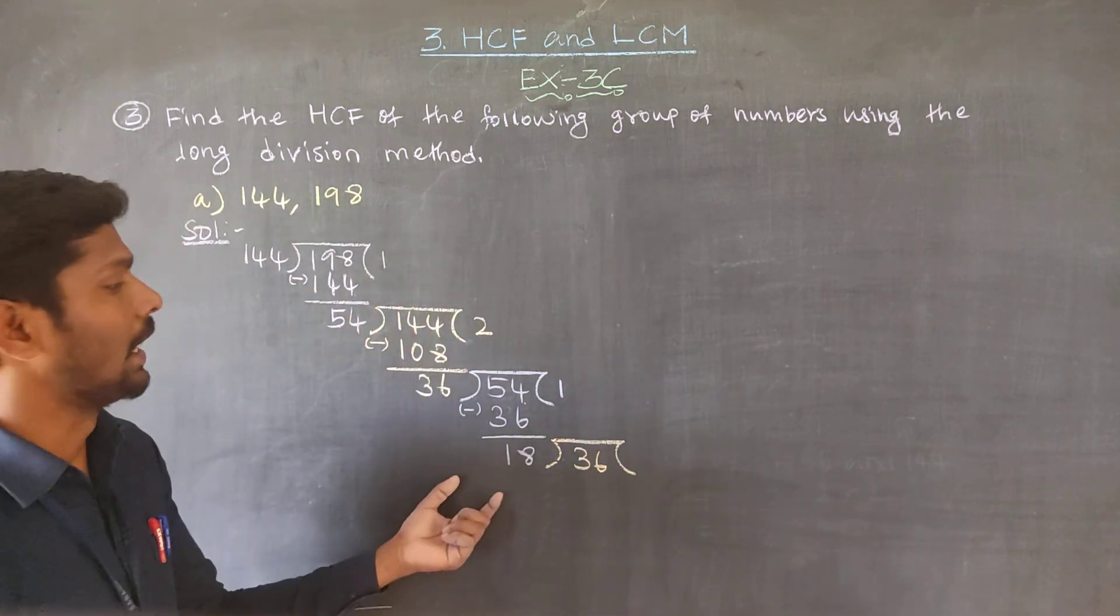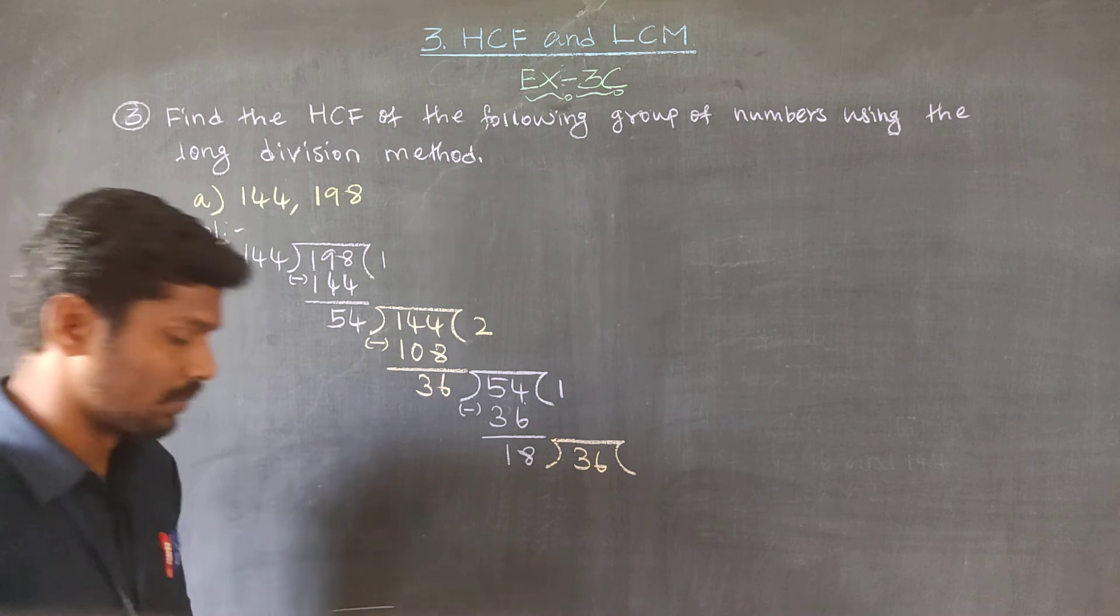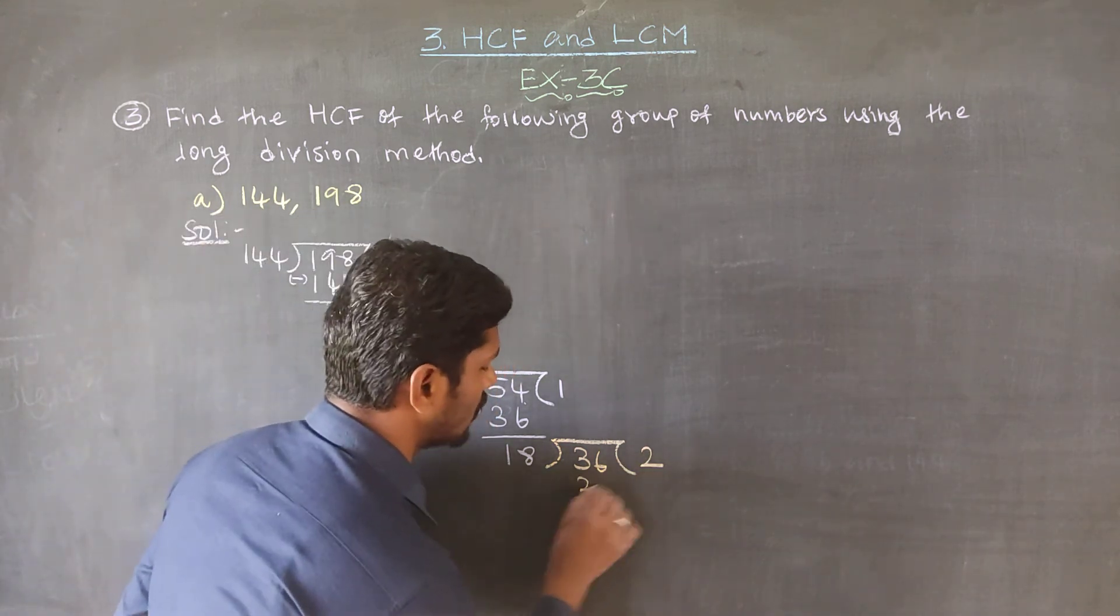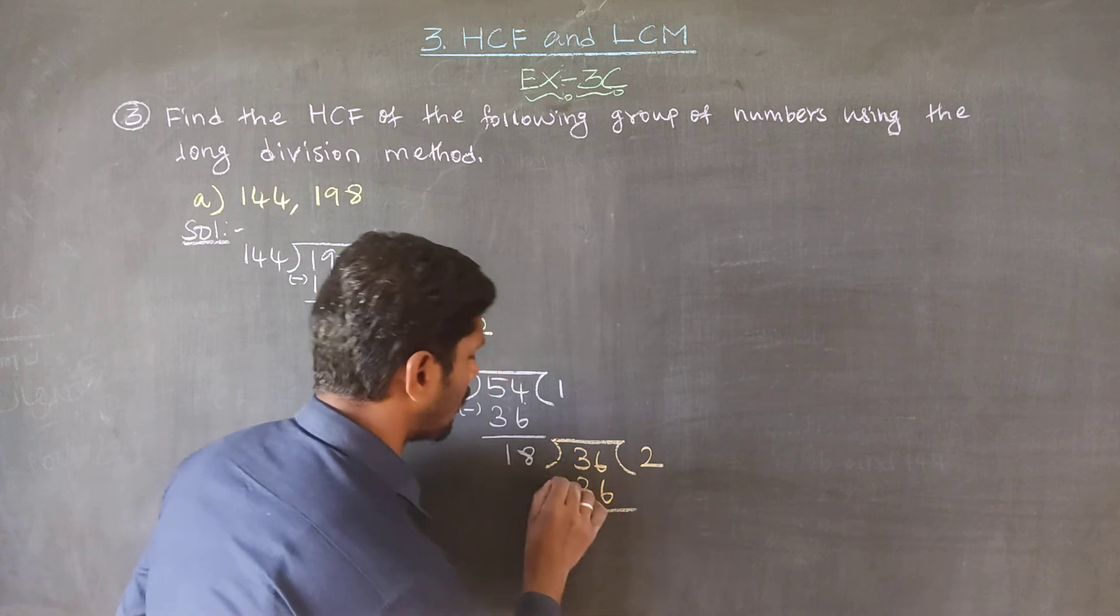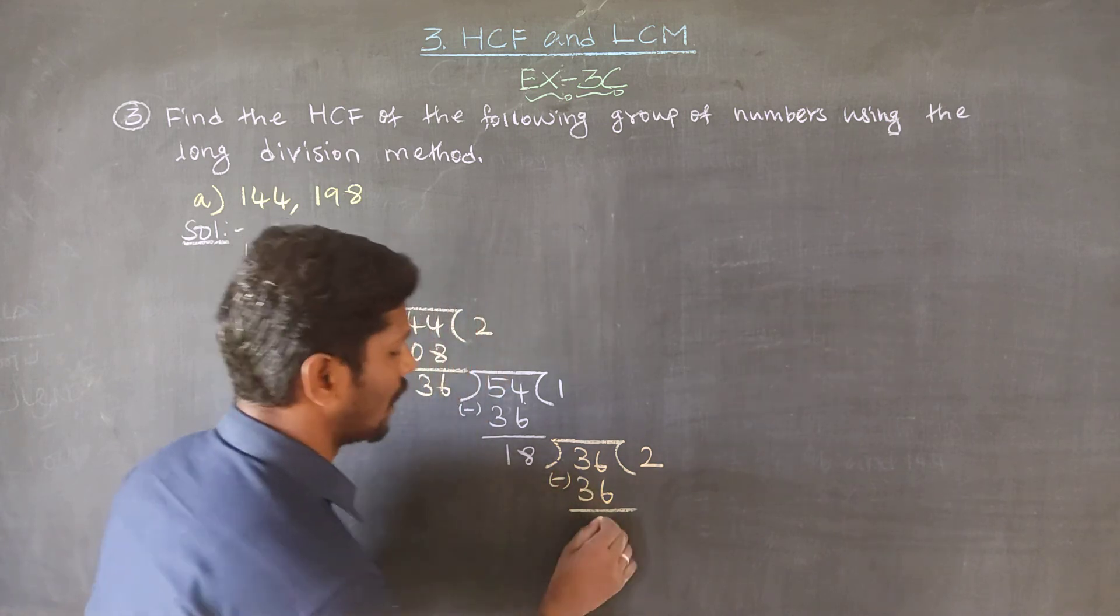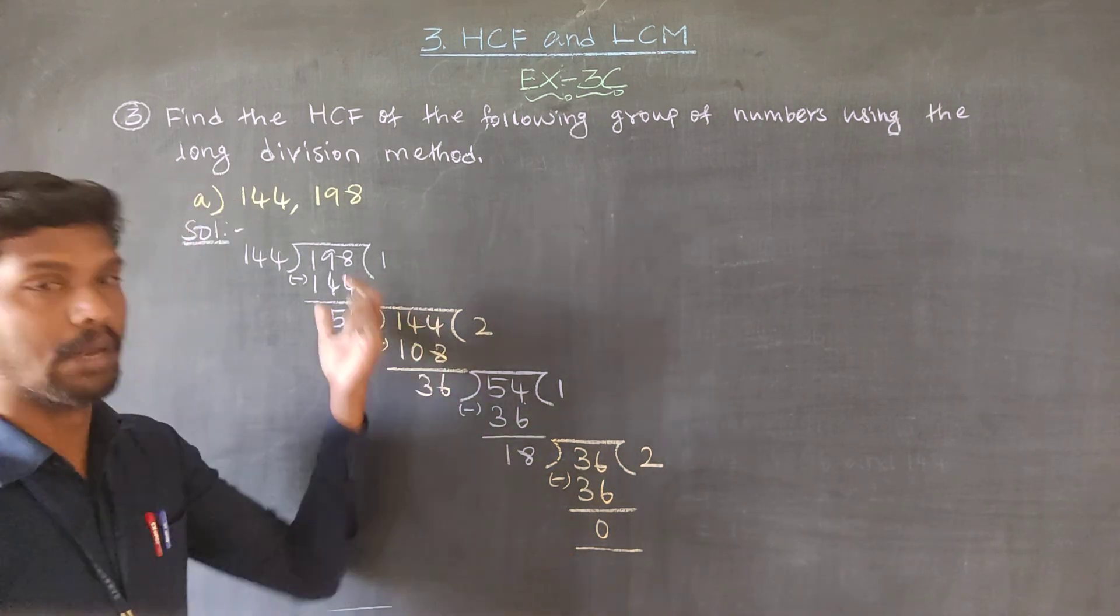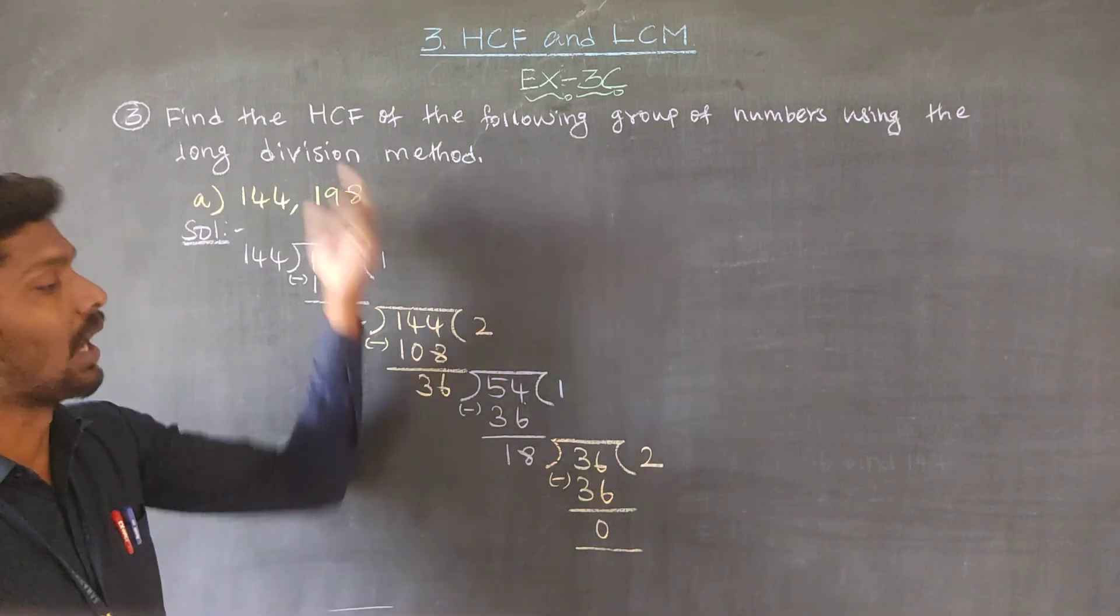36. Now 18 goes into 36. Then 18 goes into 36. Subtract: 36 minus 36 is 0. This is 0. This is the division of 0. That is the last division.